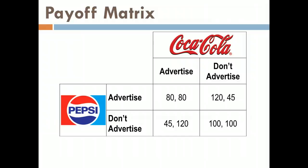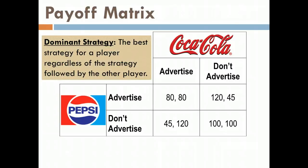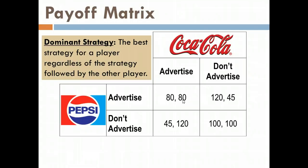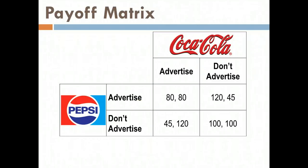Let's look at a different payoff matrix using Coca-Cola and Pepsi. They have two choices in the world of marketing: advertise or not advertise. The goal is to find what is known as the dominant strategy, which is the best strategy to follow regardless of what the other player does. In this payoff matrix, the first number in each square represents the payoff Pepsi receives, and the second number is the payoff Coca-Cola receives.